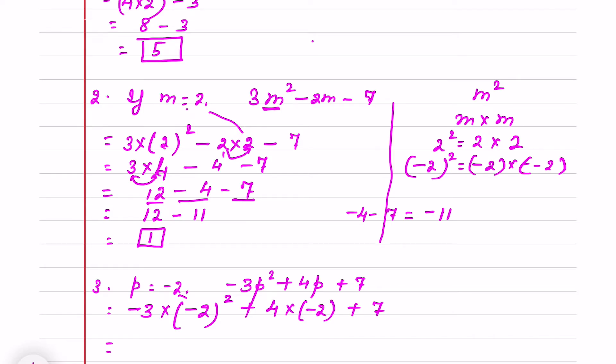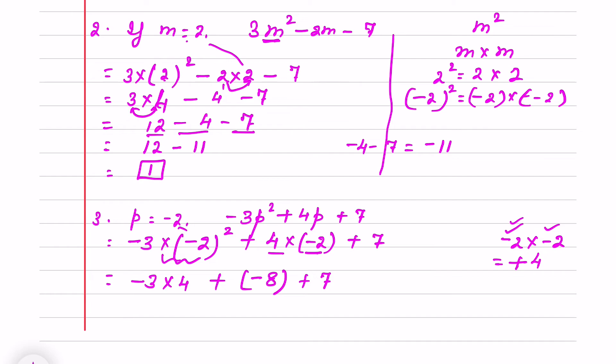I have to simplify it. Minus 2 square means minus 2 and minus 2. 2 times minus even number appear. That means sign will be plus and then we multiply. So it is minus 3 into 4. Again 4 into minus 2 will be minus 8 plus 7. Now here minus 3 into 4 will be minus 12.